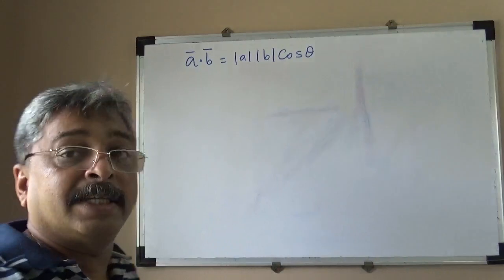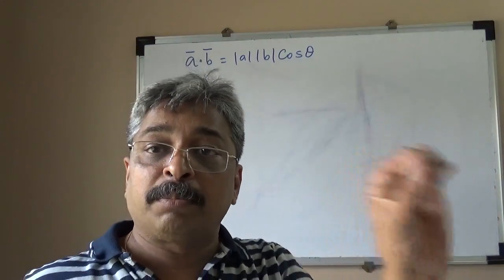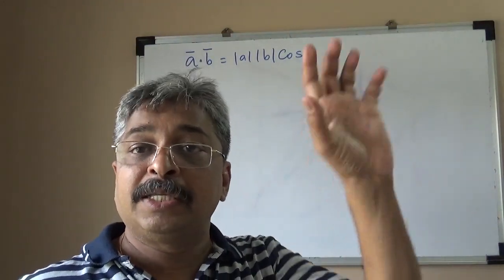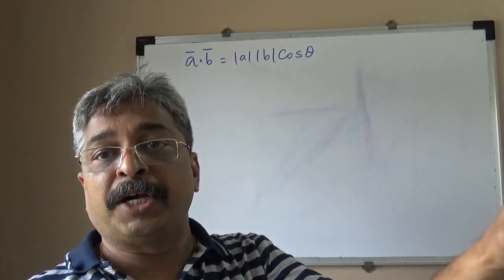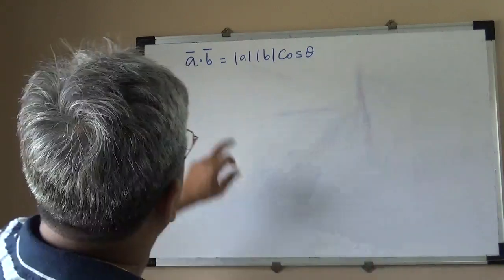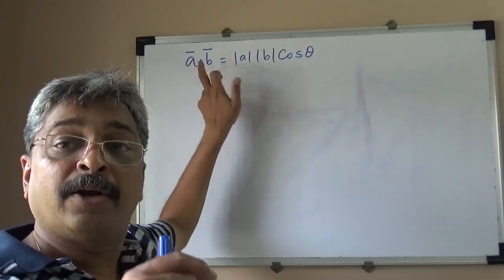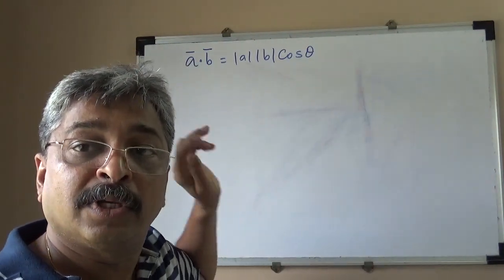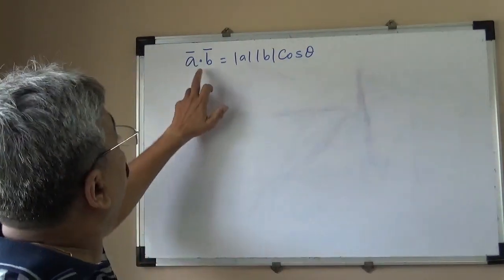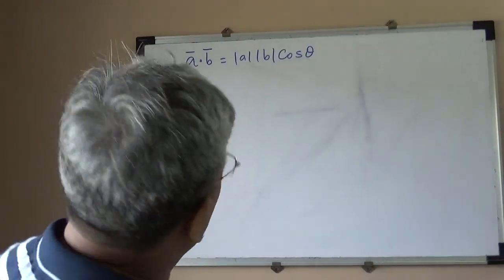In the LHS, A-bar dot B-bar is a scalar quantity and it is a notation. This is a newly defined dot — it is meant for the dot product, the dot product of two vectors.